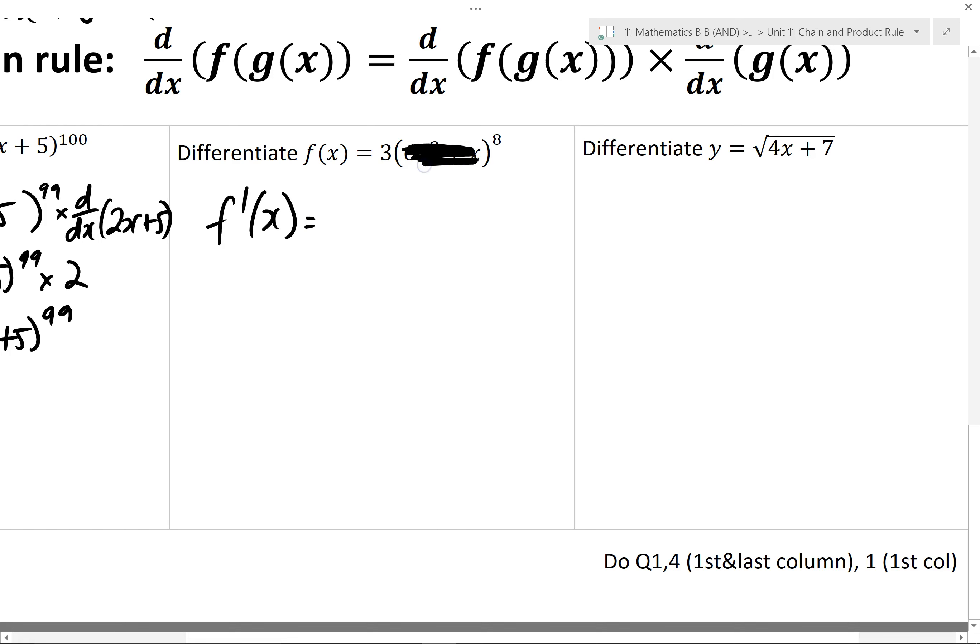Multiply by the power, 8 times 3 is 24. Reduce the power by 1, and then multiply by the derivative of what was inside. So I'll end up with 24, 6x squared plus x, multiplied by 12x plus 1.